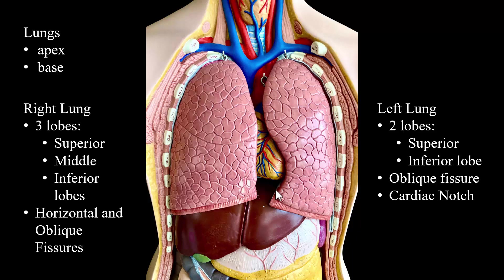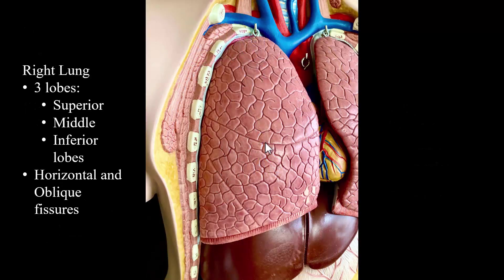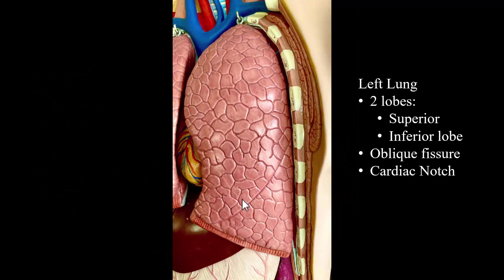Also, you're going to find the cardiac notch. Once again, the right lung has a superior, middle, and inferior lobe, a horizontal fissure, and the right oblique fissure. Looking on the left, once again there is the superior lobe, the inferior lobe, the left oblique fissure, and the cardiac notch.